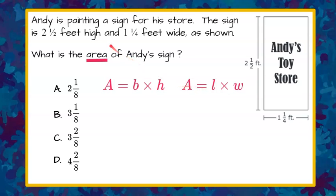So let's look at the information above. It said that the sign is 2 1⁄2 feet high and 1 1⁄4 feet wide. And we come over to our image, and we can see it's already labeled for us our height, which we can call H, or we can refer to this as our length.